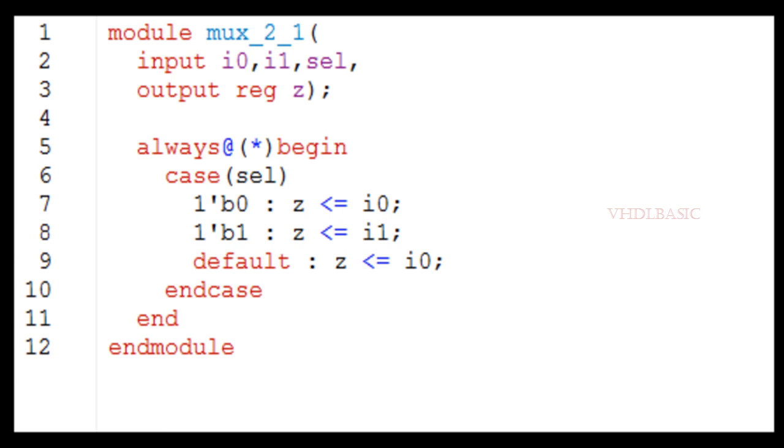This is the 2:1 MUX Verilog code. If you see here, i0, i1, and sel are the input ports, and z is the output port. I am using a case statement to implement the MUX. Wherever you are going to use a MUX, you can use a case statement. If you want to use a priority encoder, then you need to use the if-else statement. Here in the case statement, I am checking the select value. If select is 0, then I am assigning i0 to z. If select equals 1, then I am assigning i1 to z.